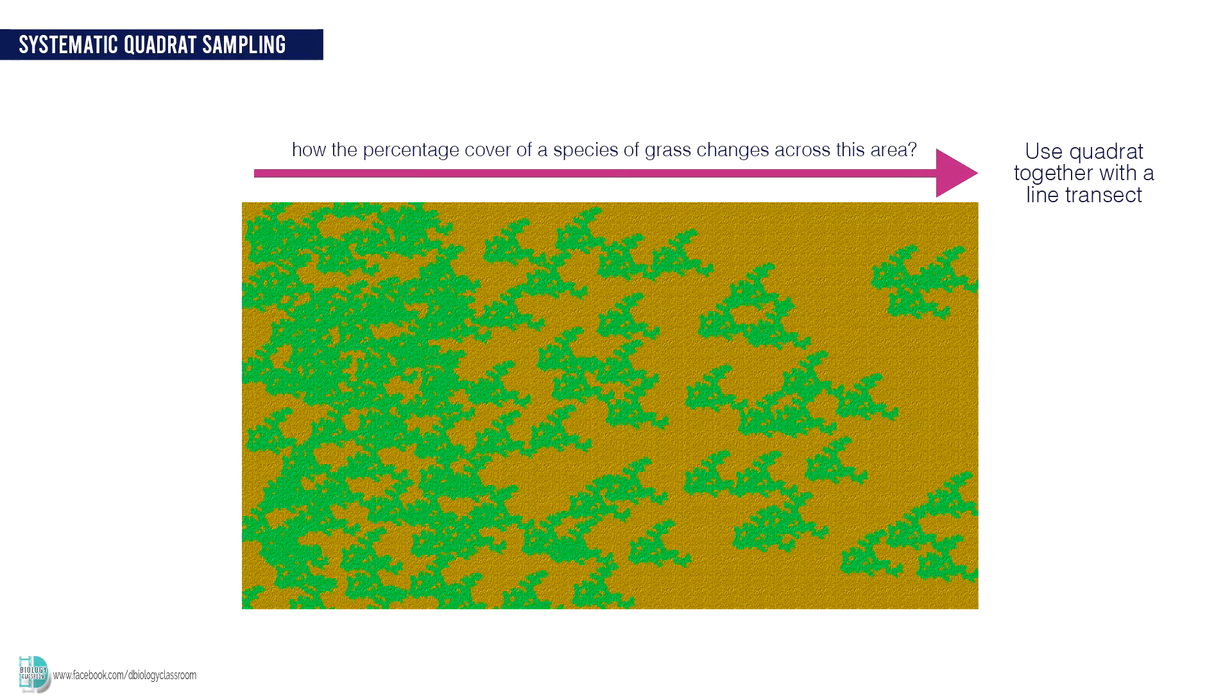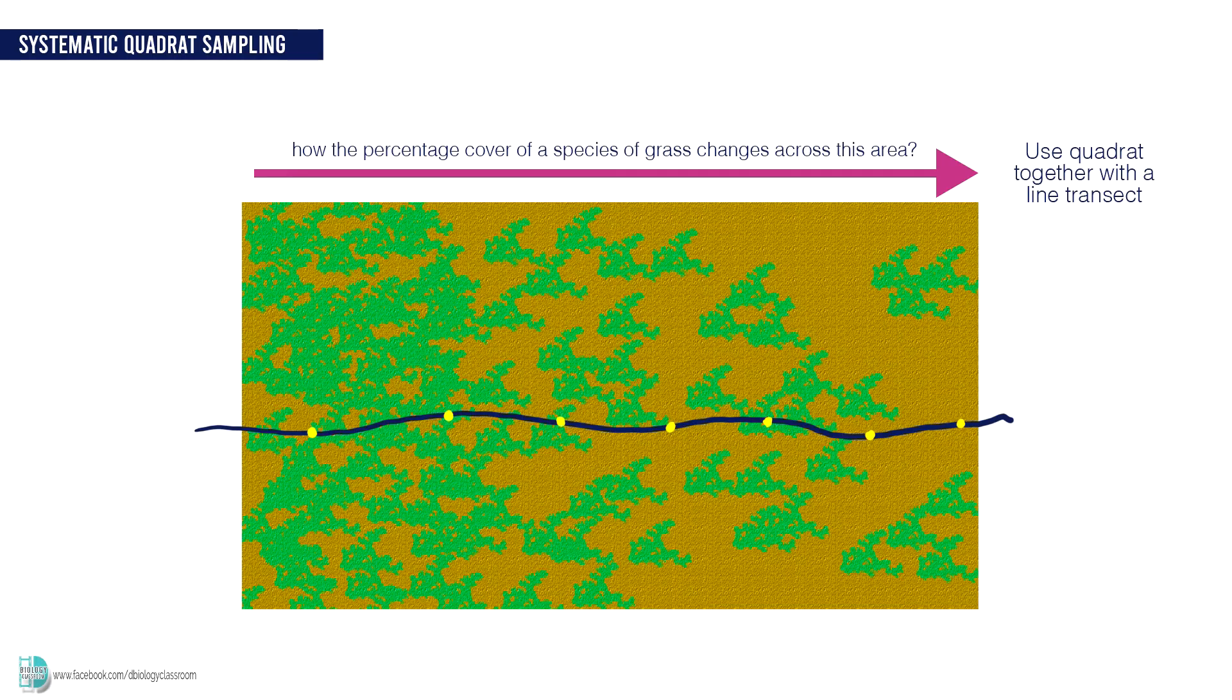A line transect can be used together with the quadrat. Prepare a line transect with marked intervals and lay it down across the area you want to sample. Then at the marked intervals, place the quadrat and start sampling.